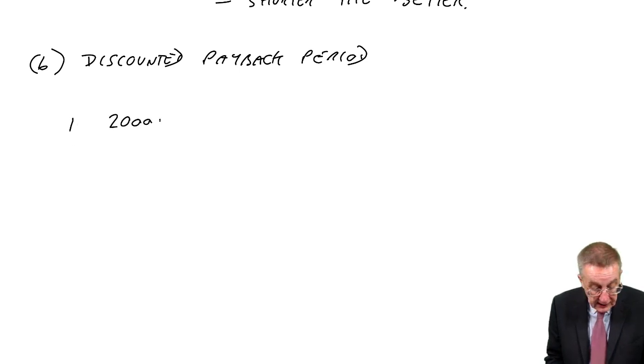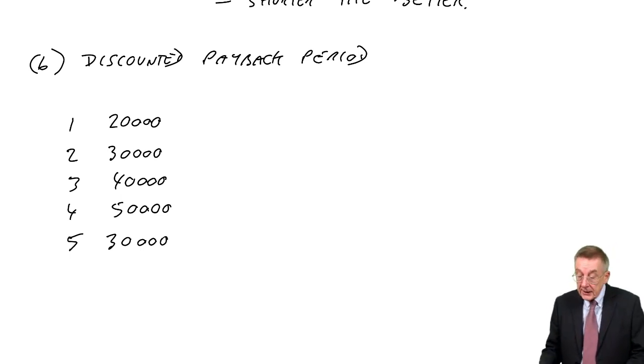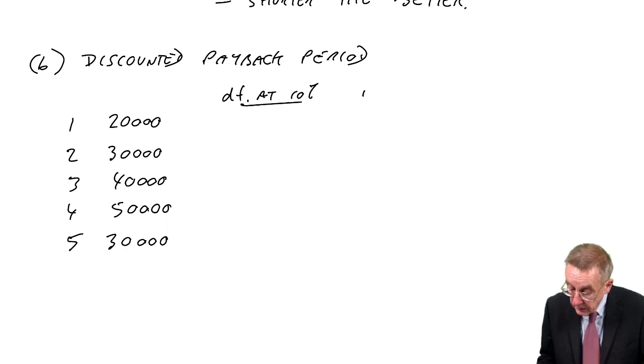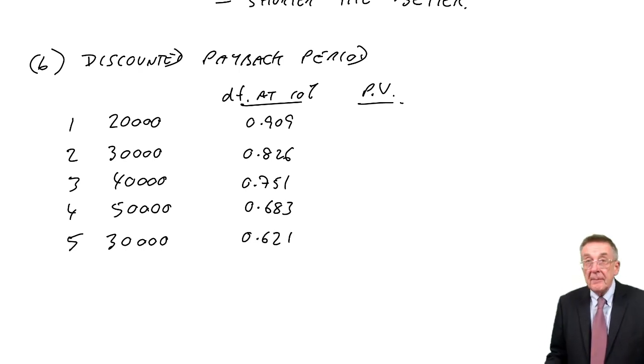Let's discount them. The flows are £20,000 in the first year, £30,000 in the second, £40,000 in the third, £50,000 in the fourth, and £30,000 in the fifth. The cost of capital is 10%. So multiply by the discount factors at 10% to get the present values. From the present value tables, the discount factors for one year are 0.909, for two years 0.826, then 0.751, 0.683, and 0.621. It's straight discounting.